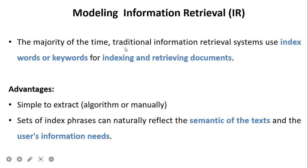The majority of the time, traditional information retrieval systems use index words or keywords for indexing and retrieving documents. Advantages of keywords include being simple to extract — either automatically through an algorithm or manually by a domain expert — and a set of index phrases can naturally reflect the semantics of the text and the user information need, bridging the gap between the user query and the semantics of the document.